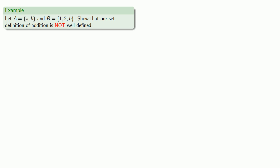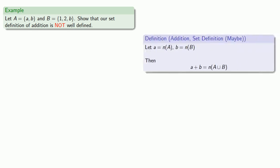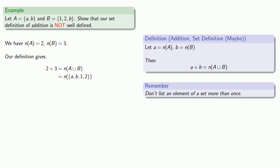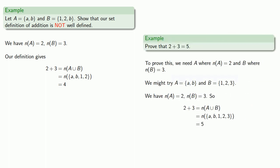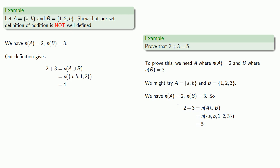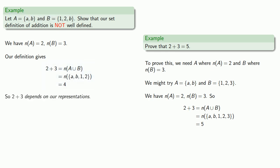Let's try to break it using two sets where we have the cardinality of A is two and the cardinality of B is three. According to our definition, two plus three will be the cardinality of the union. But the union turns out to be {a, b, 1, 2}, because we don't list an element of a set more than once. And the cardinality of the union is four. That's a problem — when we use these representations, we found that two plus three equals four, while before we found five. So two plus three depends on our representations, and our definition of addition is not well-defined.